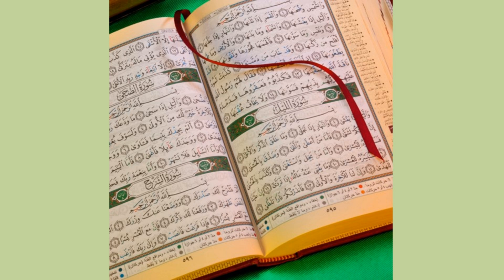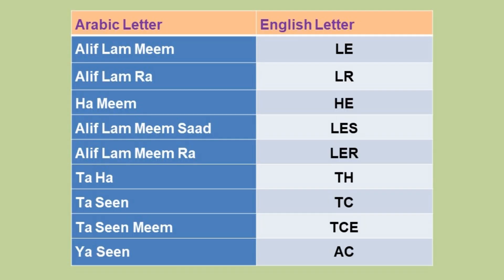This also indicates that if we decode all the letters and reproduce a mirror image, there is a possibility of seeing the Arabic Quran basically written in English. Now continuing with the other letter combinations: Alif Lam Ra represents LR; Ha Mim represents HE; Alif Lam Mim Sad represents LES; Alif Lam Mim Ra represents LER; Ta Ha represents TH; Ta Sin represents TC; Ta Sin Mim represents TCE; and Ya Sin represents AC respectively.